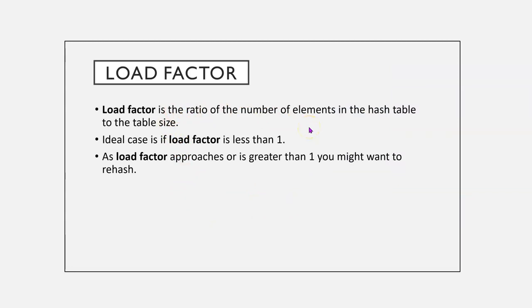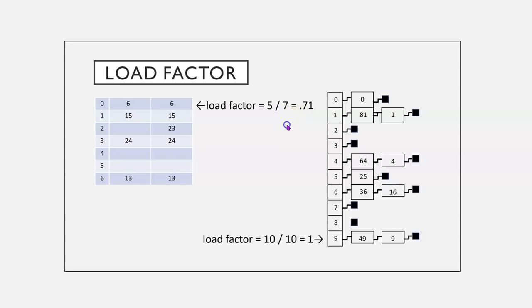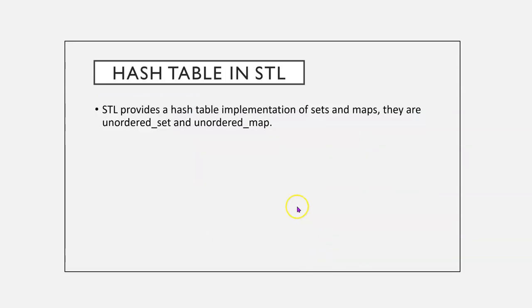Load factor is the ratio of the number of elements in the hash table to the table size. In the ideal case, a load factor should be less than 1. As the load factor approaches 1, you might want to rehash. So, here, the load factor is 0.71. Here, the load factor is 1.